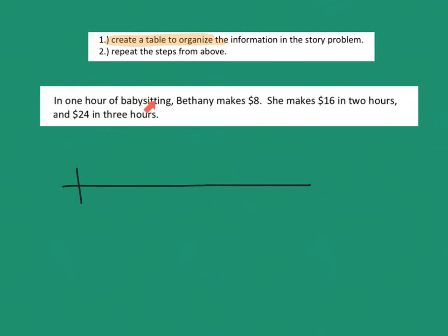And the things that I'm comparing, if I read this story problem, in one hour of babysitting, Bethany makes $8. She makes $16 in two hours. She makes $24 in three hours. So the things I'm comparing are hours of babysitting and the money I make. I'm going to put hours. I don't have to put babysitting, but I'm going to say hours. And then I'm just going to put money. So one hour.